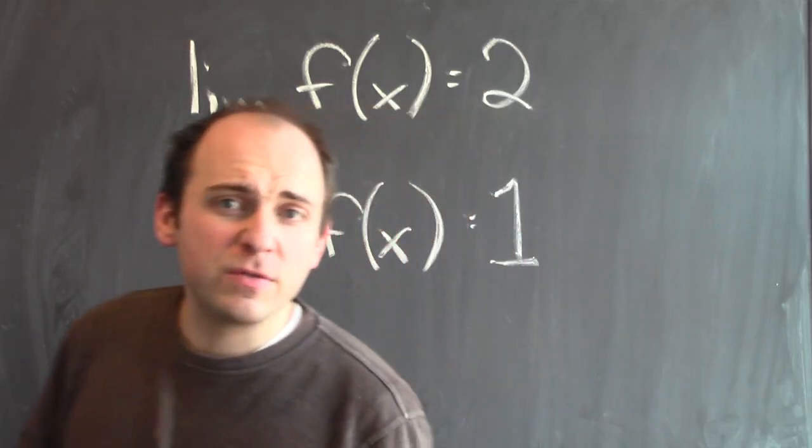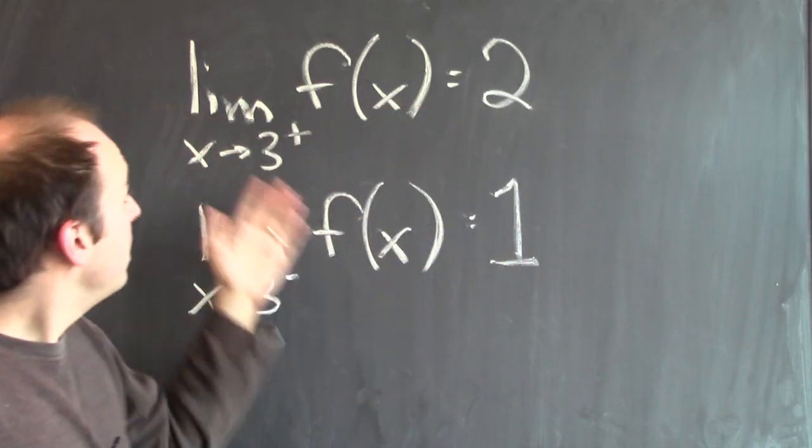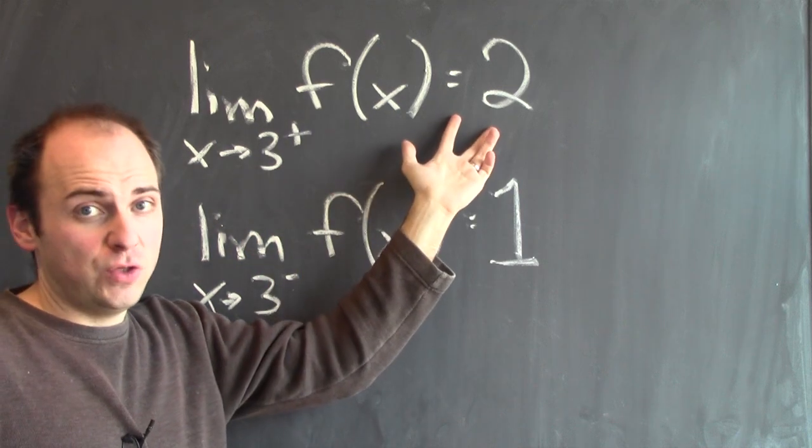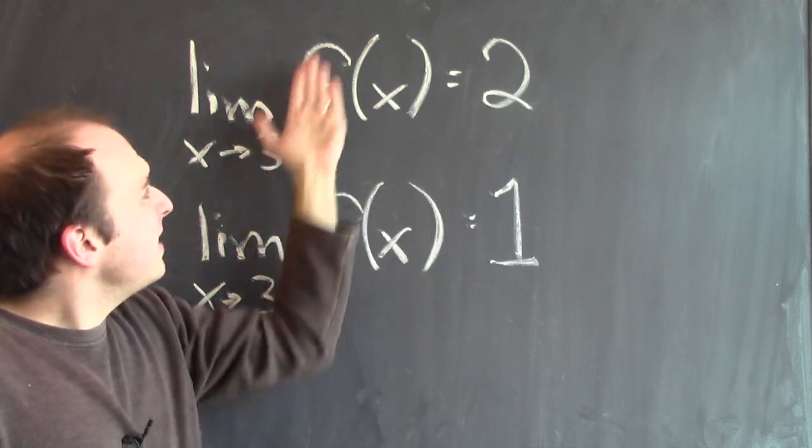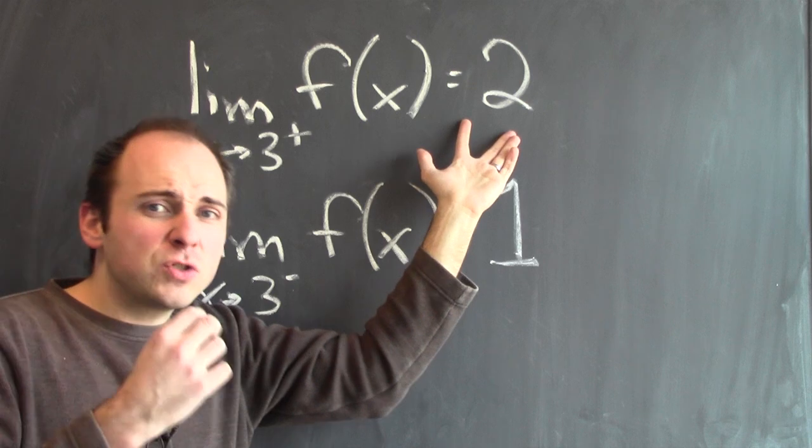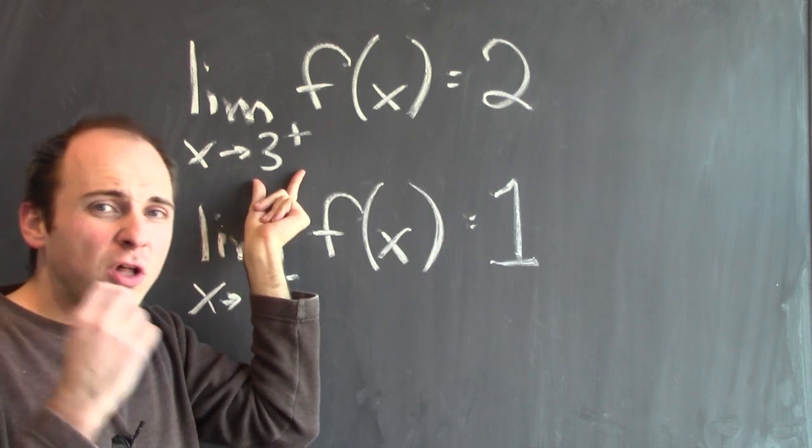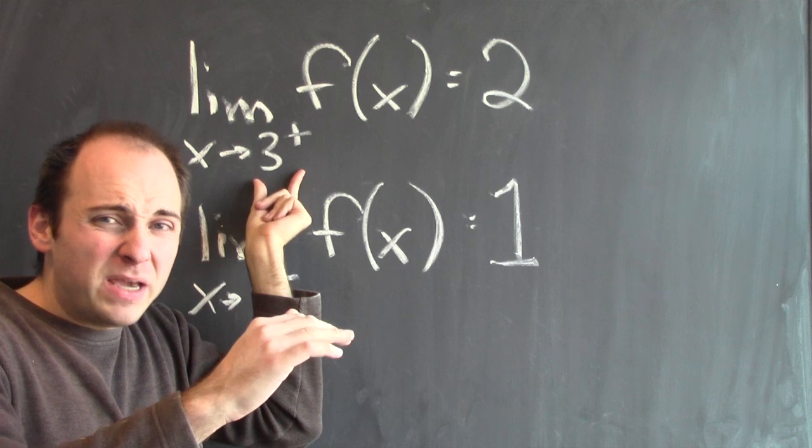We can summarize our observations with these two statements. The first is that the limit of f of x as x approaches 3 from the right-hand side is equal to 2. And that makes sense because I can get the output of the function to be as close to 2 as I'd like if I'm willing to evaluate the function at inputs that are close to, but just a little bit bigger than 3.